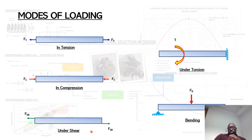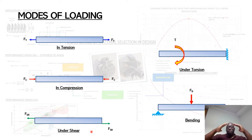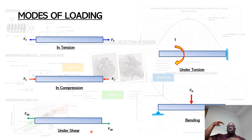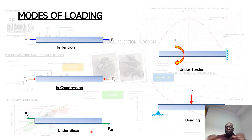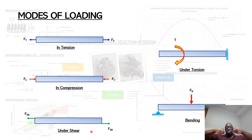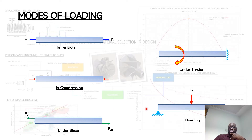You've also got what's called torsion. Torsion is due to twisting. And you've also got bending, where you've got some form of load acting normal to the axis of a given component, which can force it to bend. So these are the common modes of loading when it comes to engineering materials.